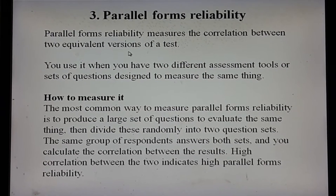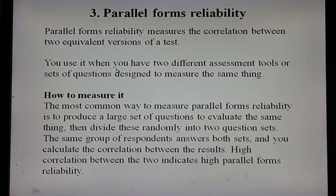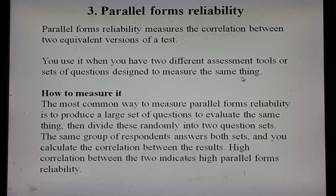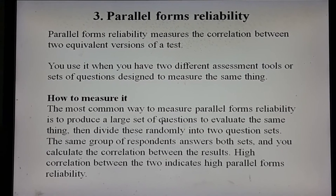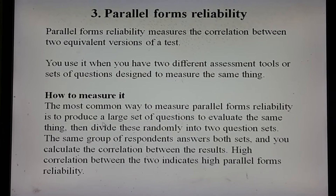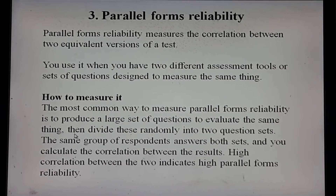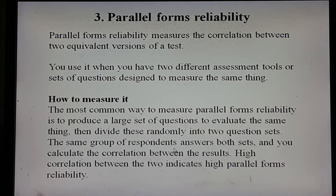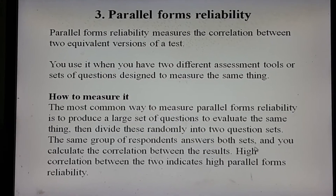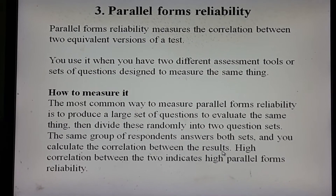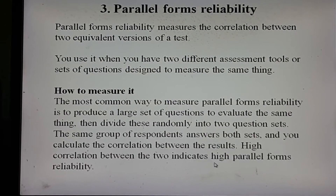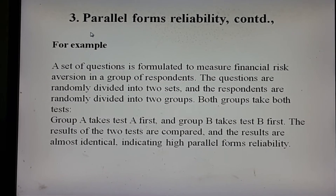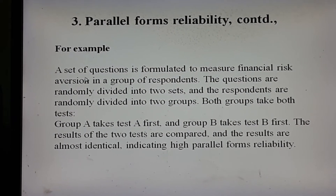The third type of reliability is parallel forms reliability. Parallel forms reliability measures the correlation between two equivalent versions of a test. You use it when you have two different assessment tools or sets of questions designed to measure the same thing. The most common way to measure it is to produce a large set of questions to evaluate the same thing, then divide them randomly into two question sets. The same group of respondents answers both sets, and you calculate the correlation between the results.